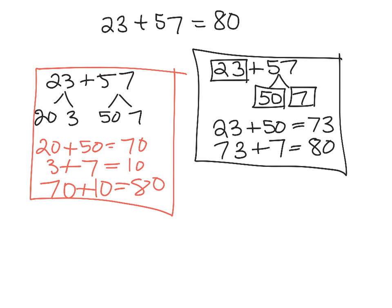Another method might be the place value chart. A student might say, I'm going to take 23 plus 57 and represent it in a place value chart, tens and ones. 23 says I've got two tens, three ones. And we're going to add in five tens.